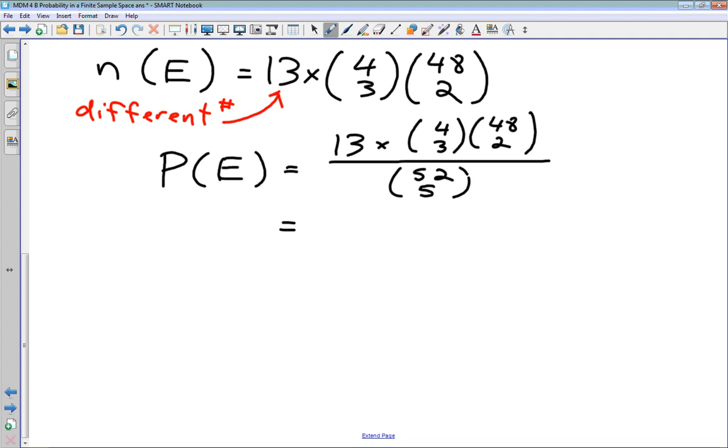And we can work this out. We get some really big numbers here. We get 58,656 in the numerator. Down in the denominator, we get 2,598,960.